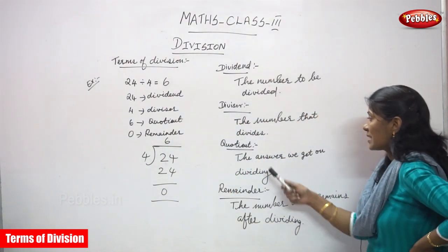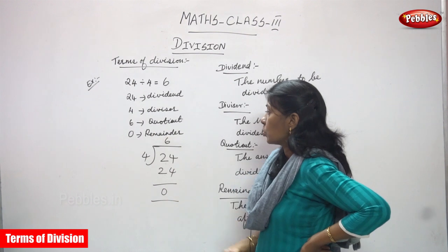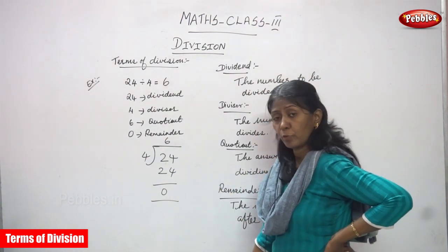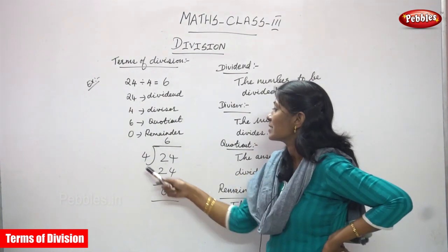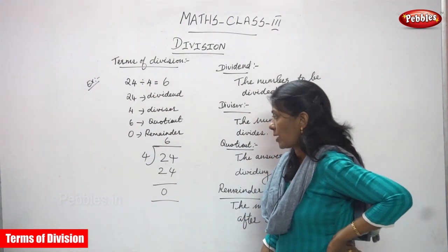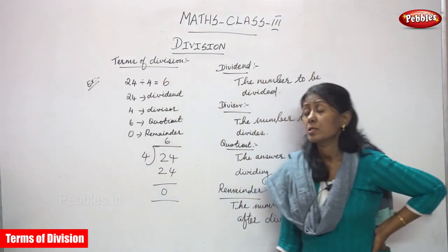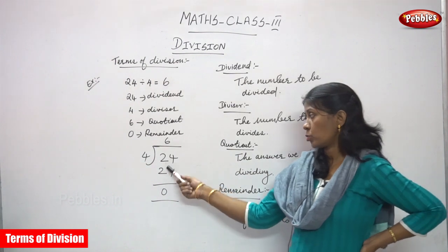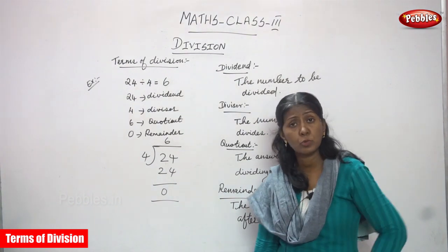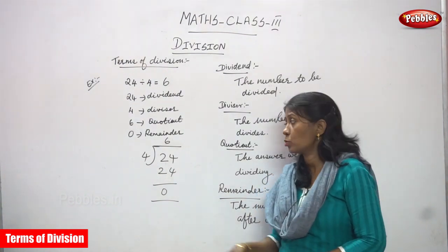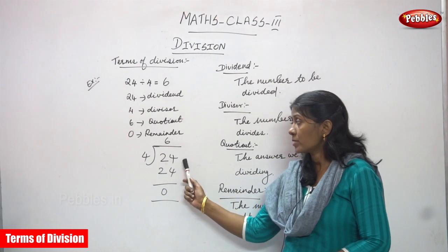The quotient is the answer we get on dividing. So 24 is going to be divided by 4. 24 is the dividend and 4 is the divisor. To divide, first you take the single digit number 2 — you can't divide because it's not enough — so you take the next digit also, making it 24.